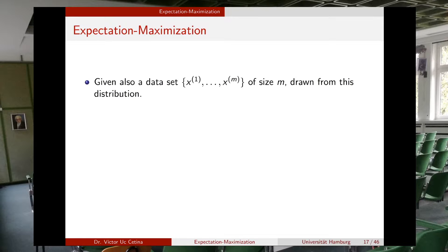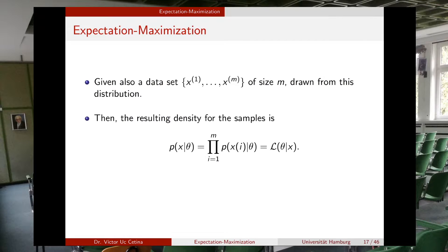Given a dataset of m points drawn from this Gaussian distribution, the resulting density will look like this. The probability of X given theta will be equal to the product, for every m points in our dataset, of the corresponding probability of observing that vector X given the parameters theta.